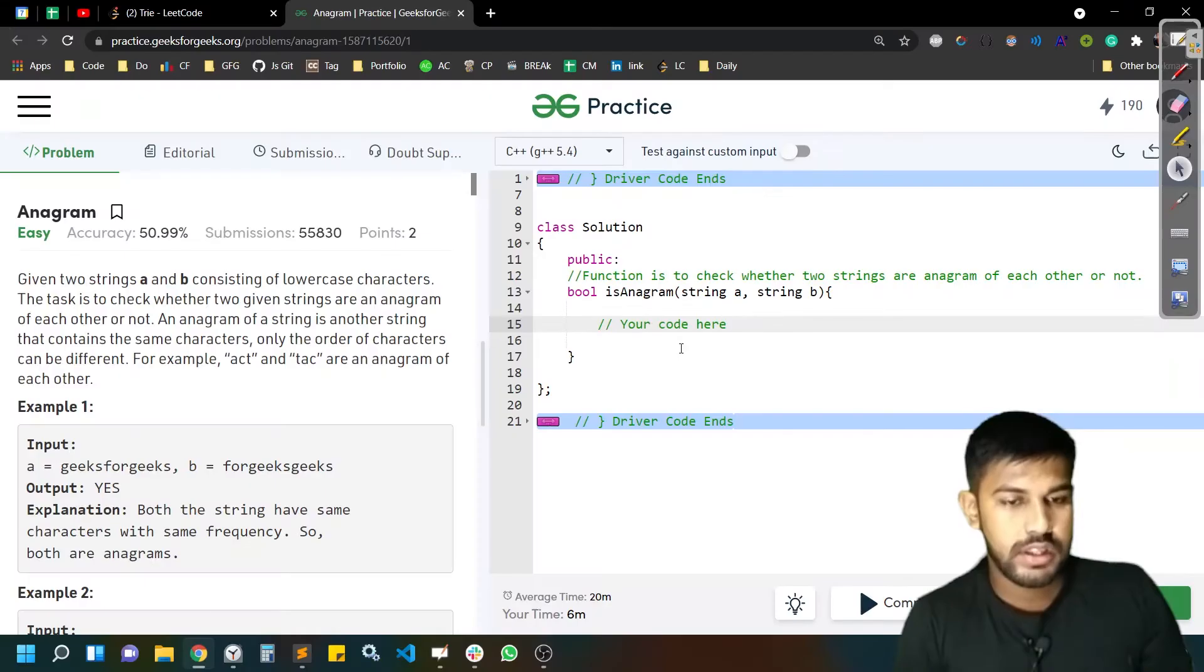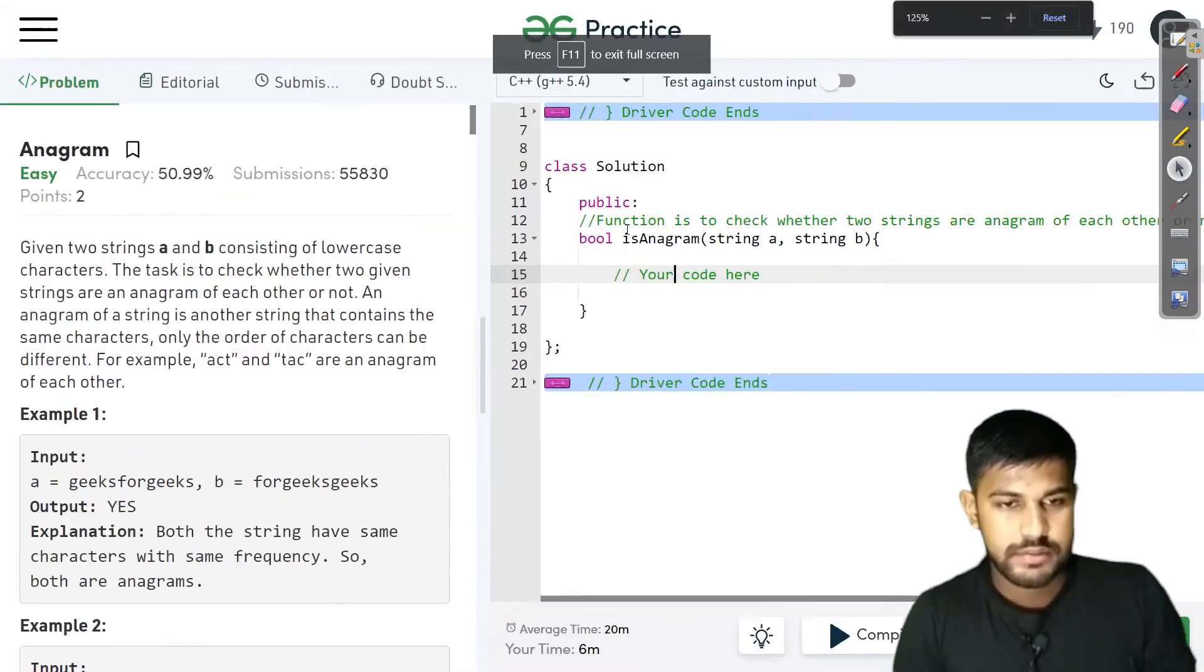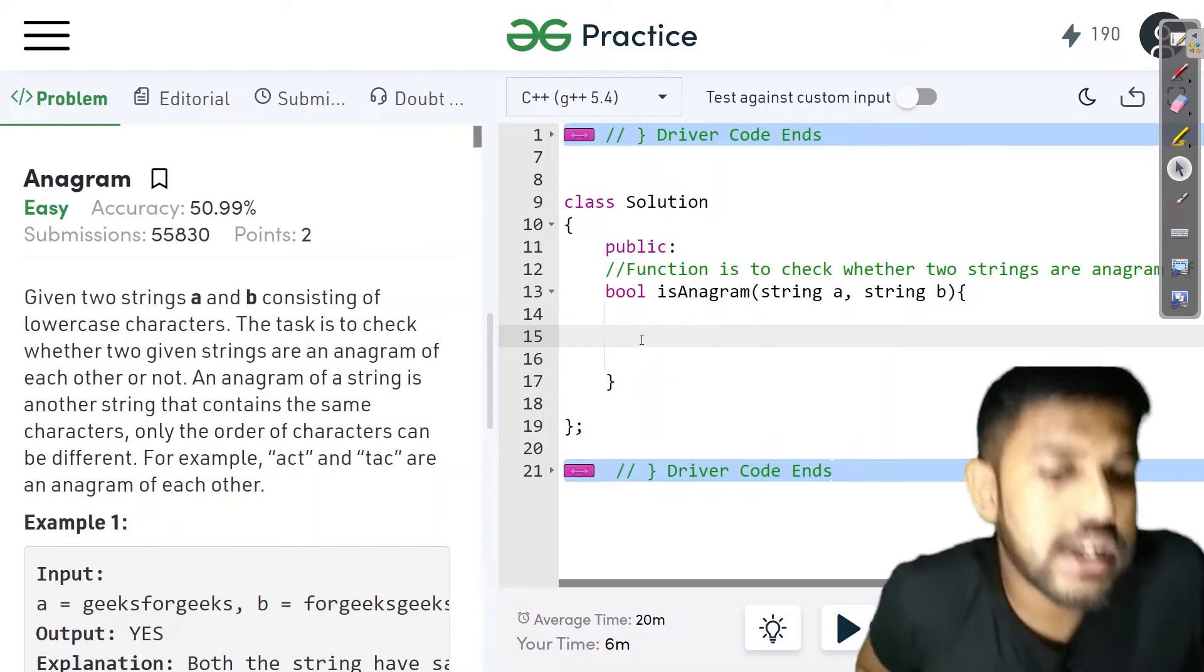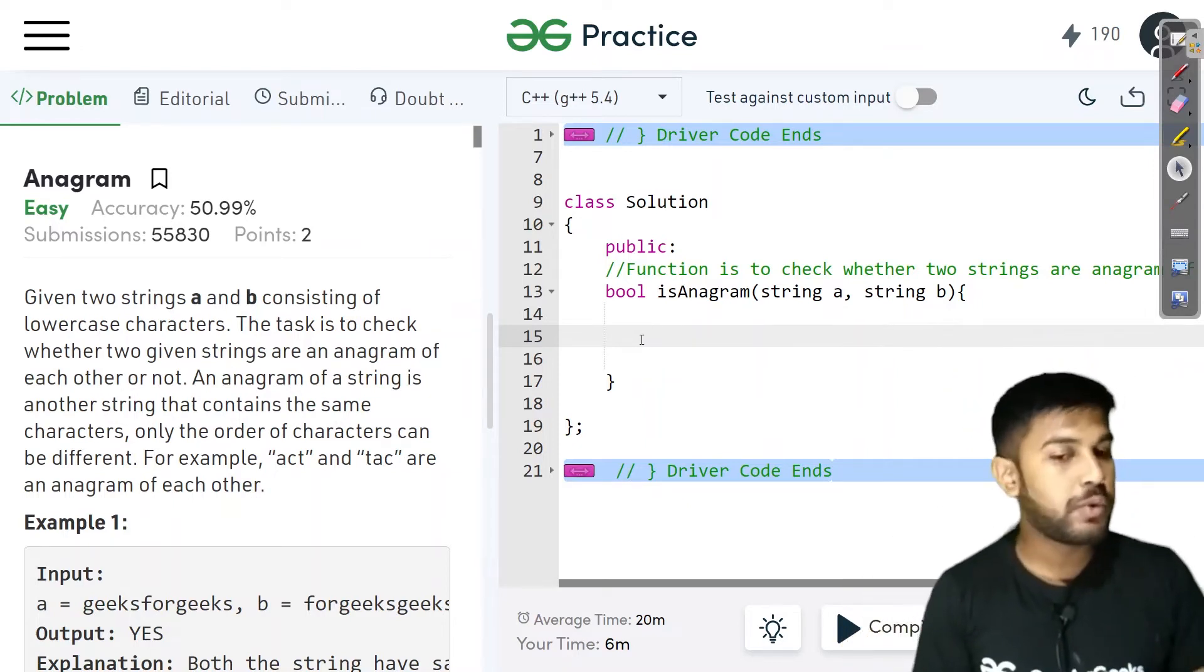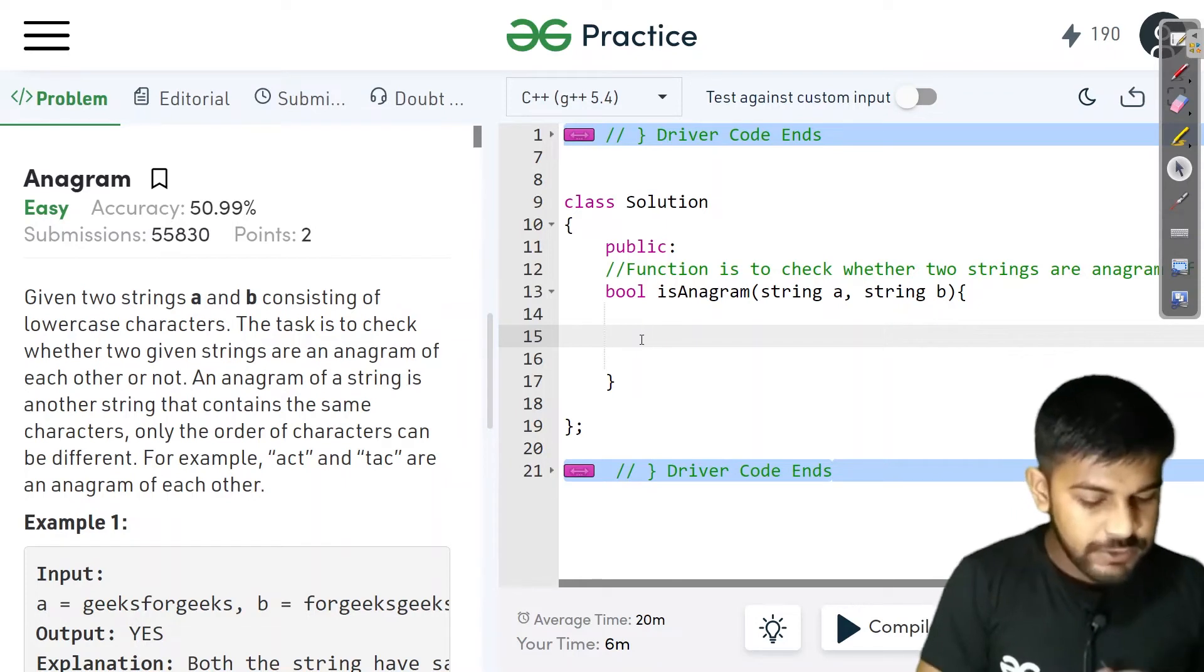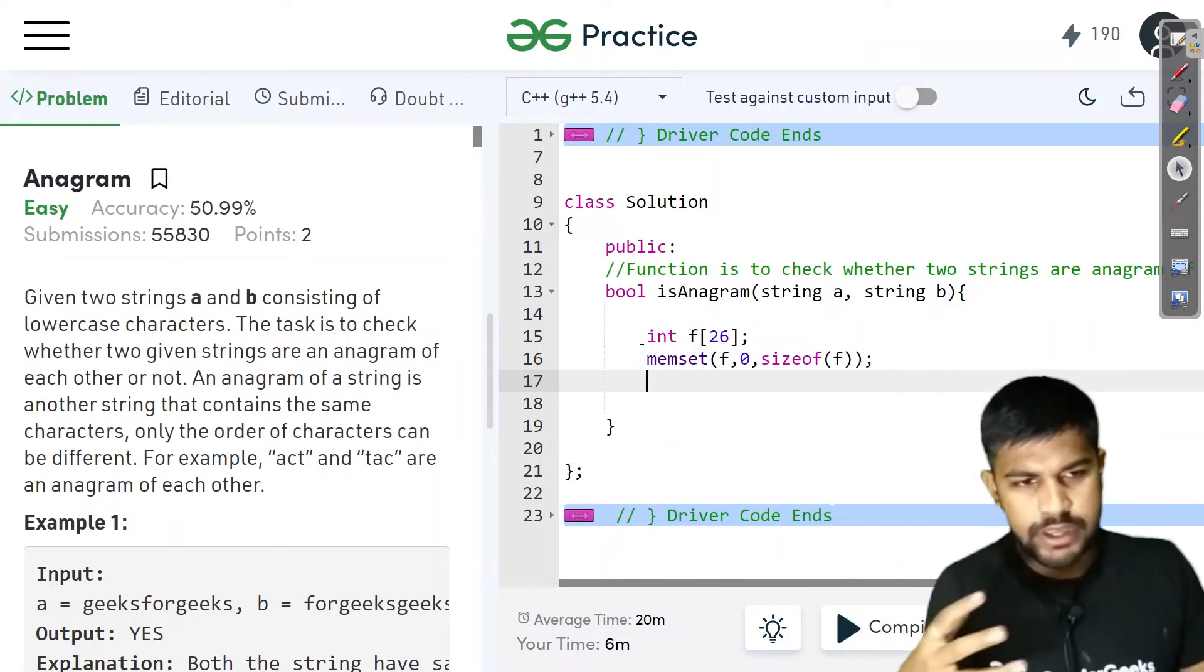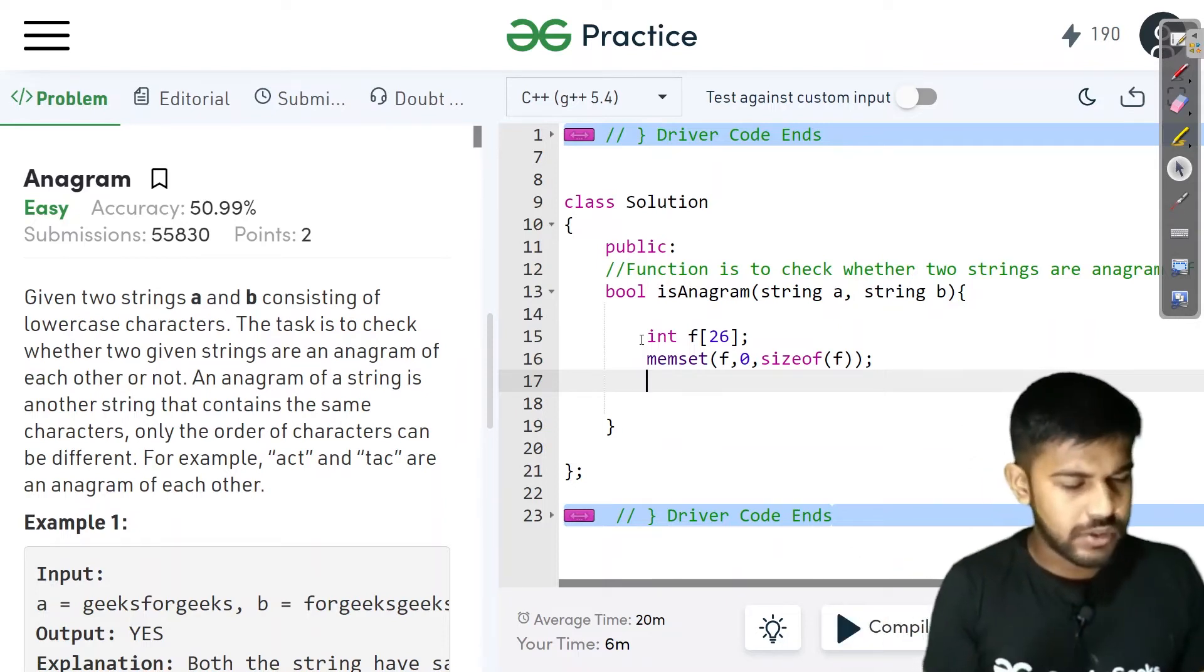We are provided with A and B string. First we should remove this comment so that it makes the code look better, or you can leave it as it is. Next we can start with an array of 26. Then we can do memset f, 0, size of f. This would make everything as 0. Or you can just start with a loop from 0 to 26 and make everything as 0.